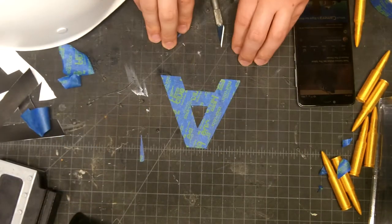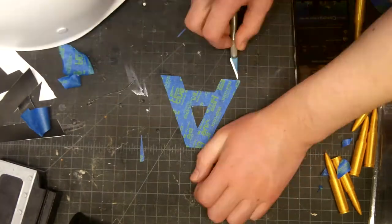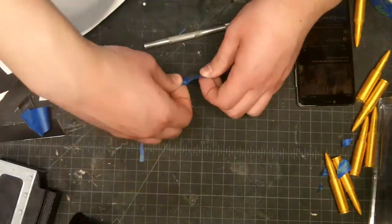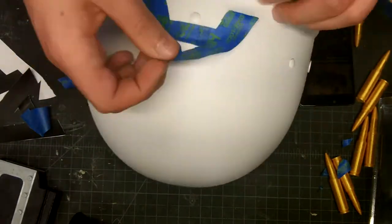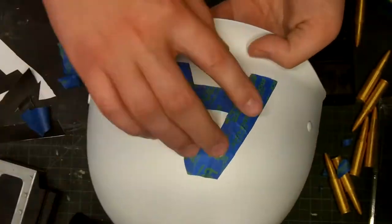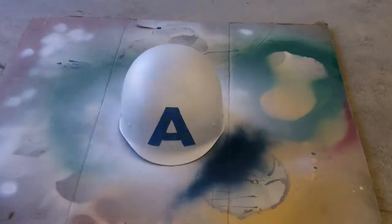Then I carefully peeled it up from my workbench mat and then I just put it on there. Try to get as centered as possible. There's a few wrinkles on it, but it was fine.